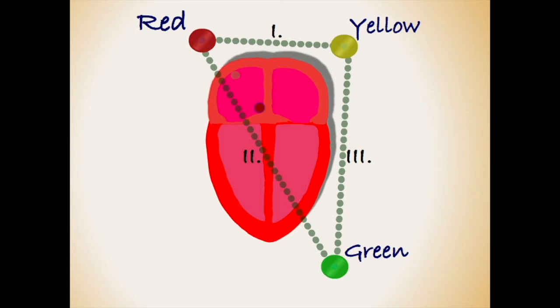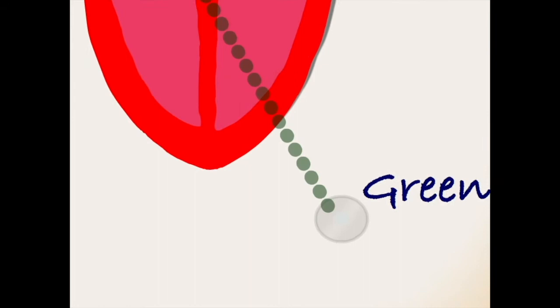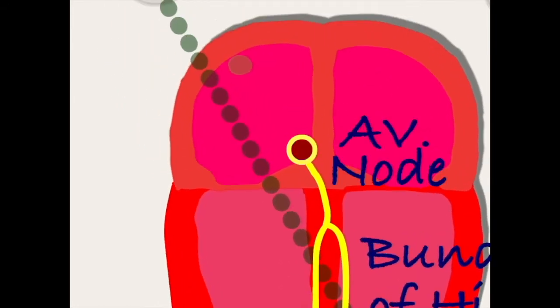For this video we will use lead 2, looking straight up diagonally through the heart along the bundle of His, AV node, and sinus node.